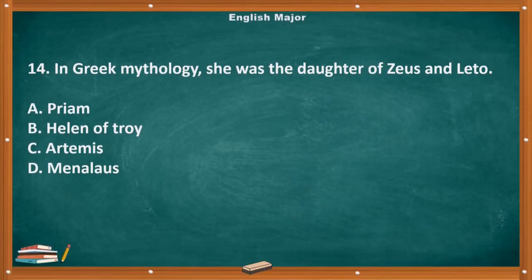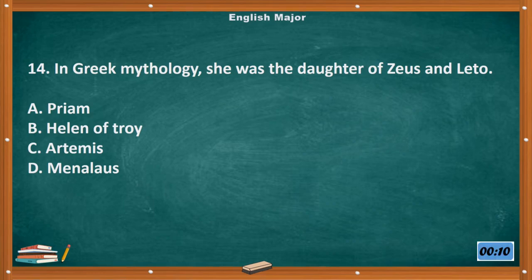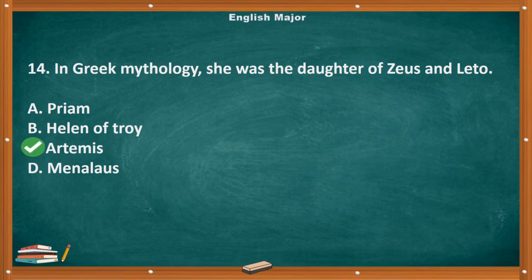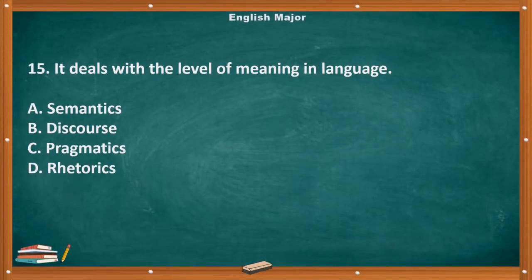Question number 14. In Greek mythology, she was the daughter of Zeus and Leto. A. Iphigenia/Priam. B. Helen of Troy. C. Artemis. D. Menelaus. The correct answer is letter C, Artemis.